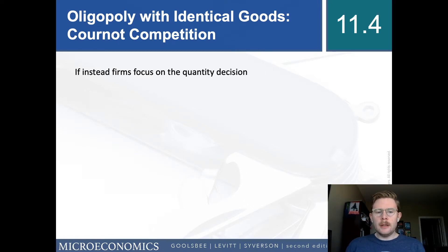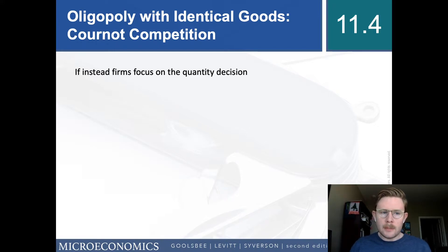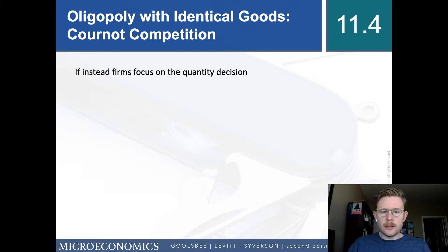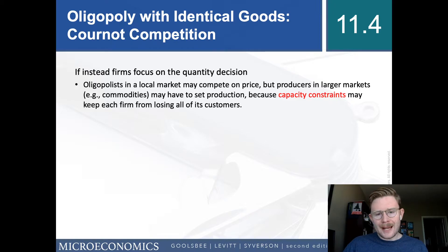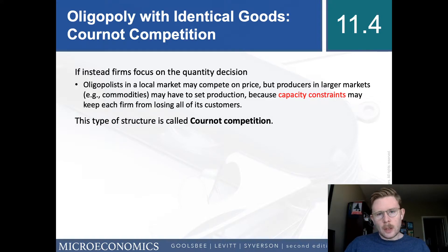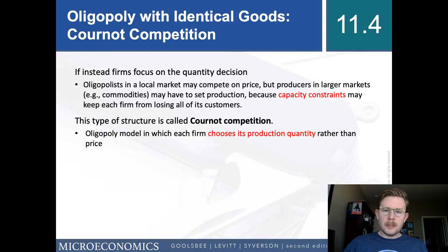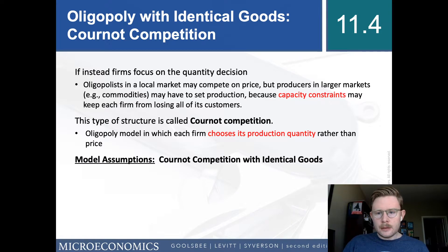In contrast to Bertrand competition, we also have Cournot competition. Instead of focusing on choosing their price, firms focus on their quantity decision. Oligopolies and local markets may compete on price, but producers in larger markets, especially in commodities, have to set their production numbers because capacity constraints keep each firm from losing all of its customers. In Cournot competition, instead of solving for P, we solve for Q. Cournot models are oligopoly models in which each firm chooses its production quantity rather than its price.